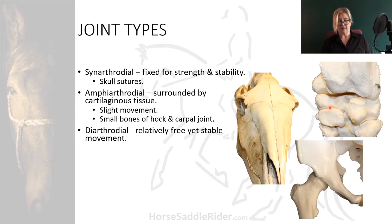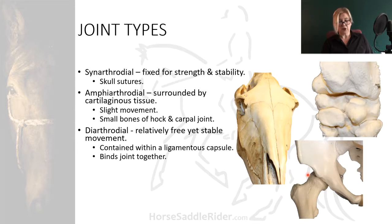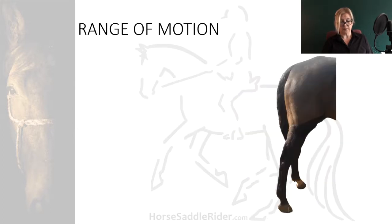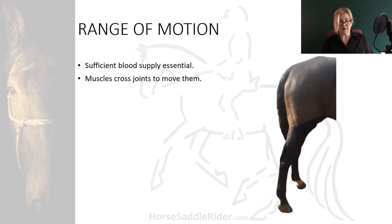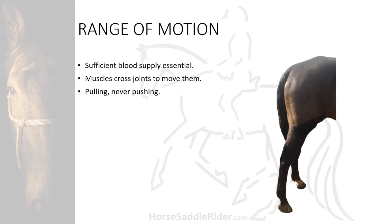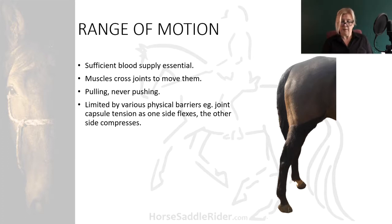Diarthrodial means they're relatively free yet stable. They're contained within a ligamentous capsule, binding the joints together and protecting from aberrant movement. This is the coxofemoral joint or the hip joint. Range of motion is dependent on a sufficient blood supply. Muscles have to cross joints in order for them to move. They pull, they never push, but we'll take a closer look at that in the biomechanics module. They're limited by various physical barriers - for example, joint capsule tension: as one side flexes, the other side compresses.